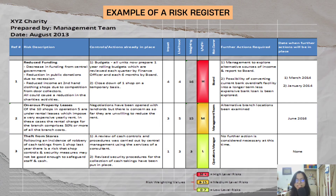Here is an example of what a risk register looks like. It includes the reference number, risk description, controls or actions already in place, impact, likelihood, weighting, as well as the corresponding level and type of risk — indicated in colors orange, red, and light green. Next is the risk owner, further actions required, and lastly the date when further actions will be in place.